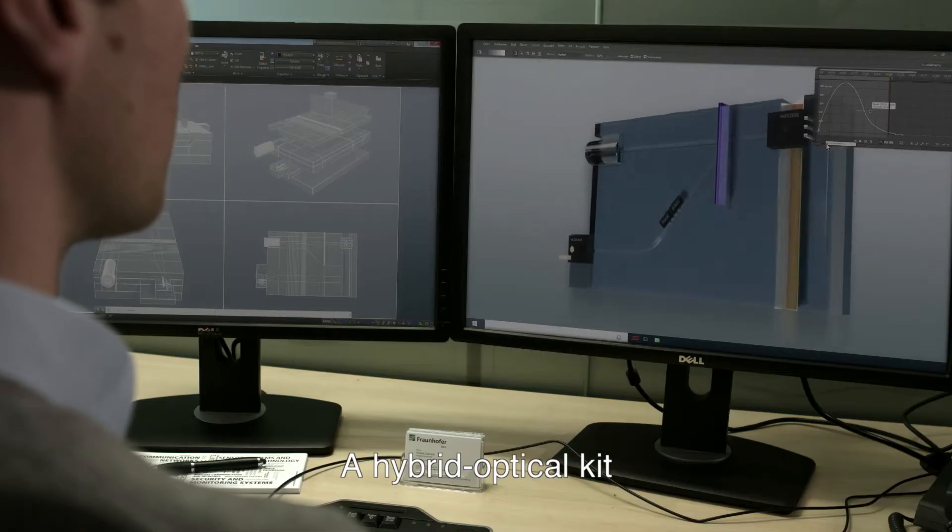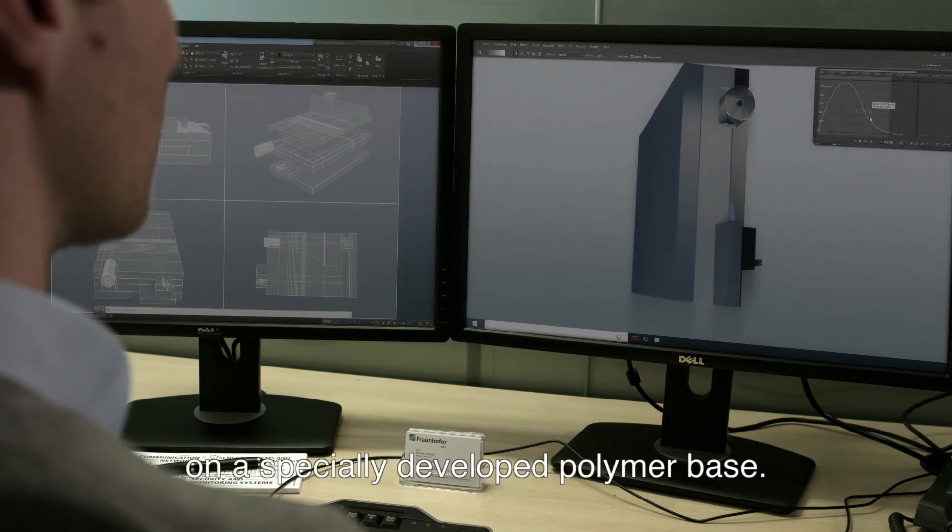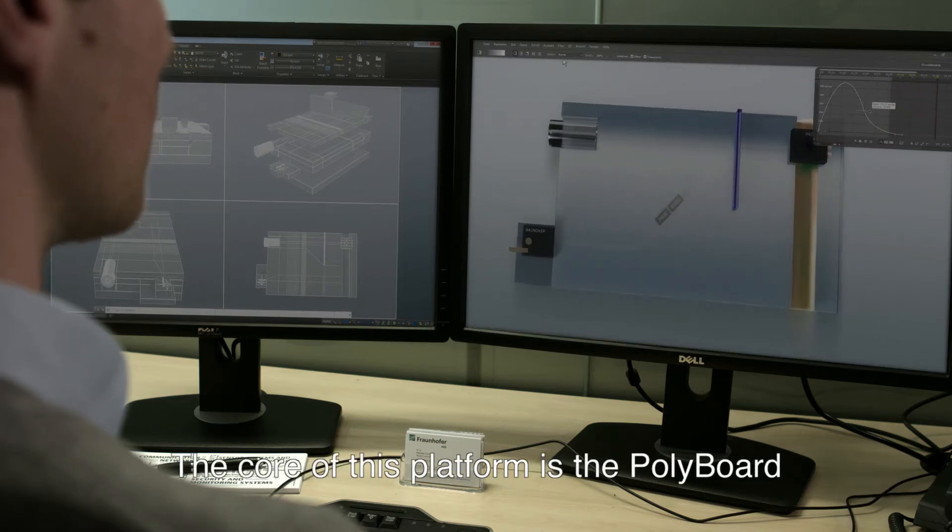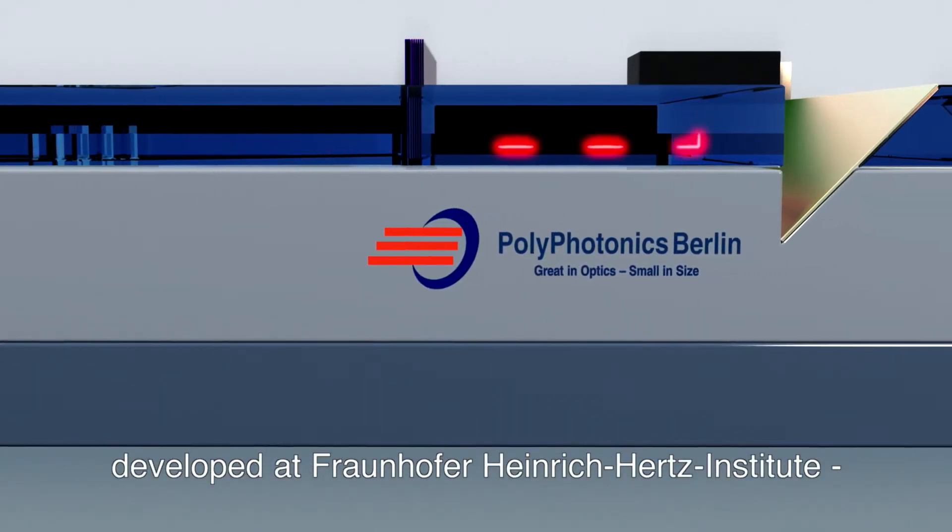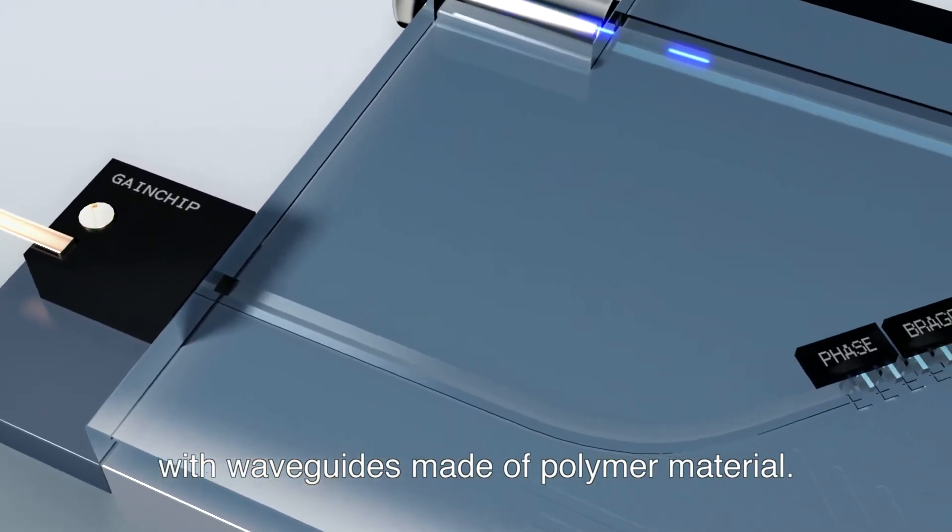A hybrid optical kit on a specially developed polymer base. The core of this platform is the Polyboard developed at Fraunhofer Heinrich-Herz Institute with waveguides made of polymer material.